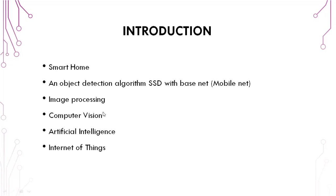Next is Image Processing. Image Processing is a method which helps to perform some operations on images in order to extract information from them. It helps to analyze and manipulate digitized images and helps to improve their quality.